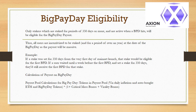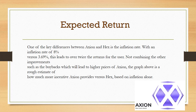Calculation of payout on Big Pay Day: the payout pool is calculated via daily inflation and auto-bought ETH, plus Big Pay Day tokens, multiplied by (1 + critical mass bonus + virality bonus). One of the key differences between Axion and HEX is the inflation rate — 8% versus 3.69% — which leads to over twice the returns for the user. Not combining the other improvements, such as the buybacks which will lead to higher prices of Axion, the graph above is a rough estimate of how much more incentive Axion provides versus HEX based on inflation alone.